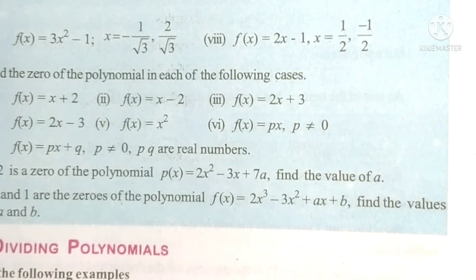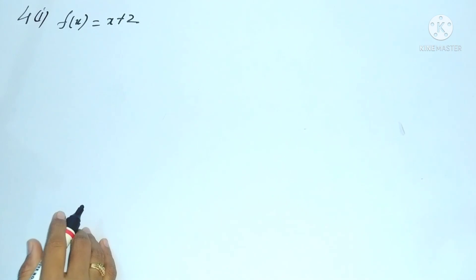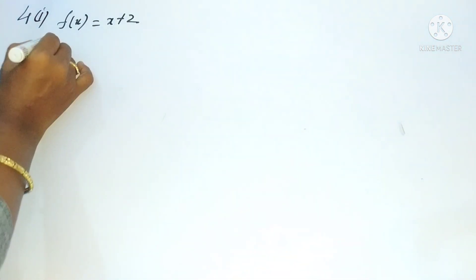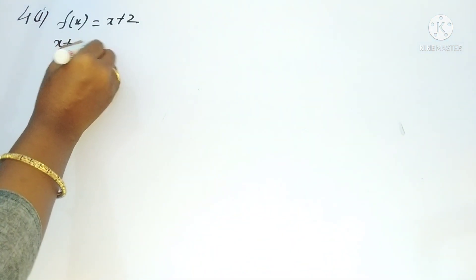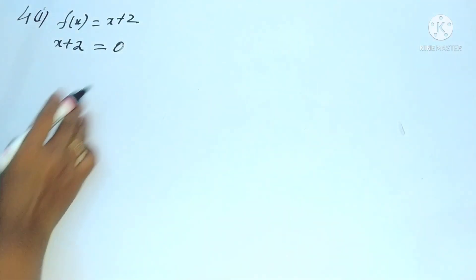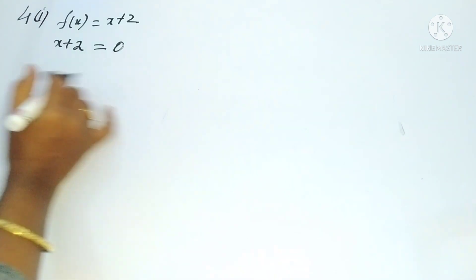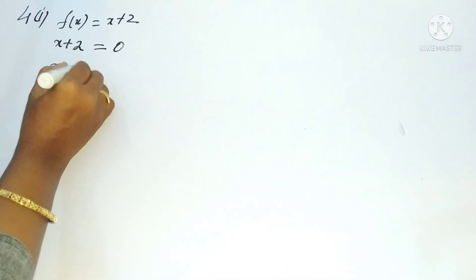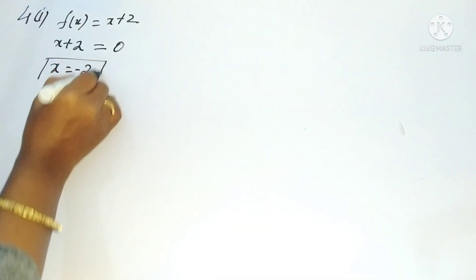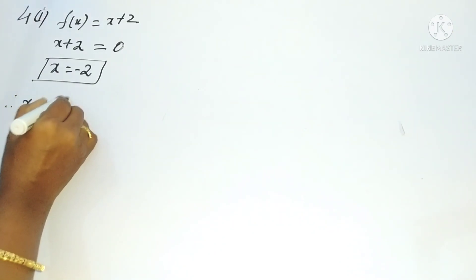We will solve this one: f(x) = x + 2. To find the zero of the polynomial, we take the polynomial and equalize it to zero. When we transpose +2 to the RHS it becomes minus, so x = -2. Therefore x = -2 is the zero of f(x).